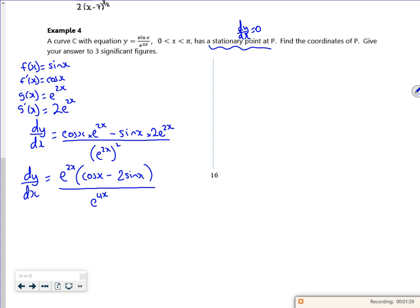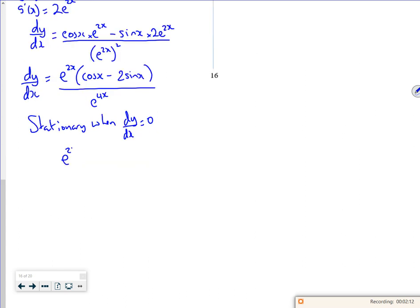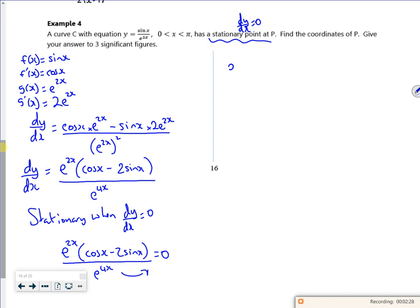Now, we have a stationary point when dy by dx is zero. I can put that equation equal to zero. If I multiply through by the bottom line, that disappears. And I've got e to the 2x cos x minus 2 sin x is zero. I've got e to the 2x is zero, which we know has no solution because e to the 2x is greater than zero.